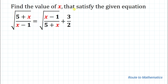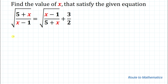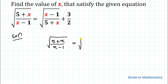The given question is: find the value of x that satisfies the given equation — root under (5 plus x) divided by (x minus 1) equals root under (x minus 1) divided by (5 plus x) plus 3 by 2.